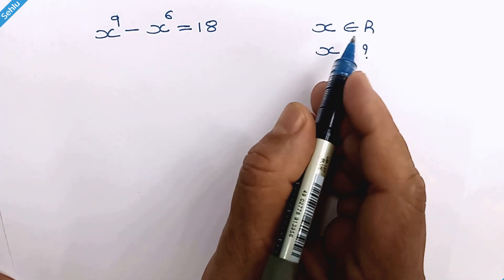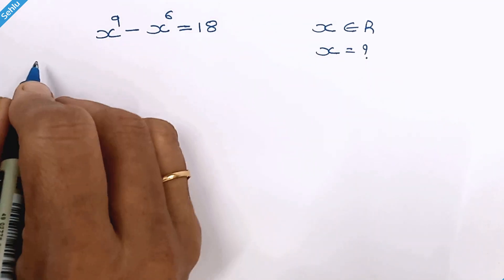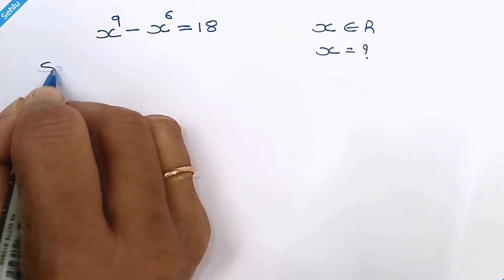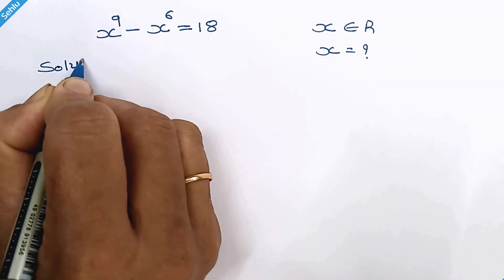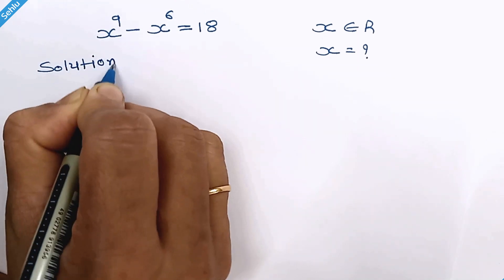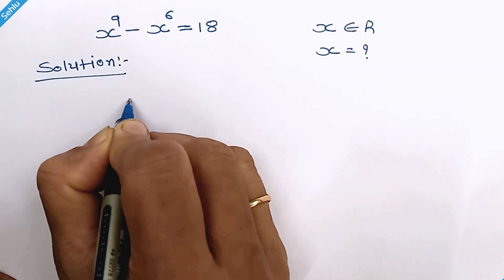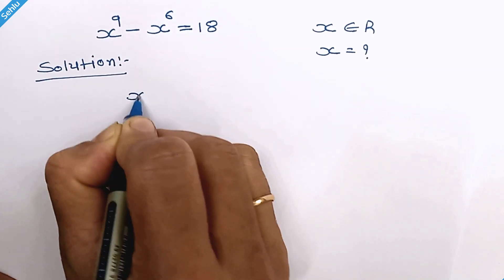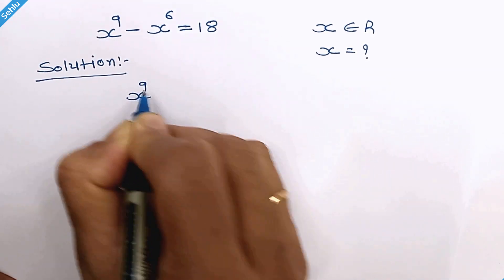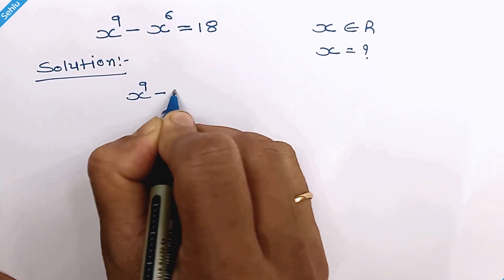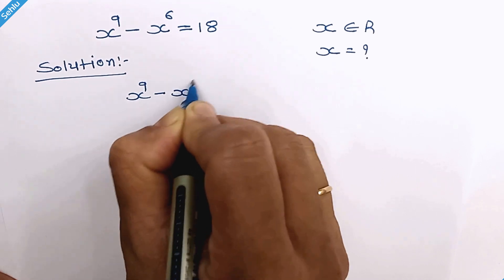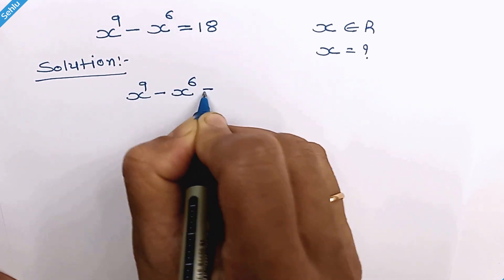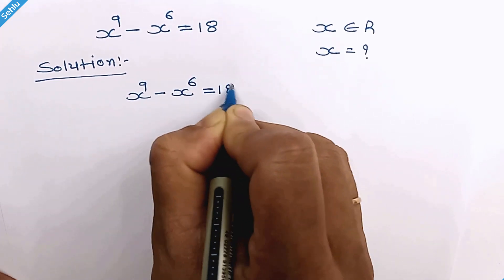Hello friends, let's find the real value of x. Our question is x raised to 9 minus x raised to 6 is equal to 18.